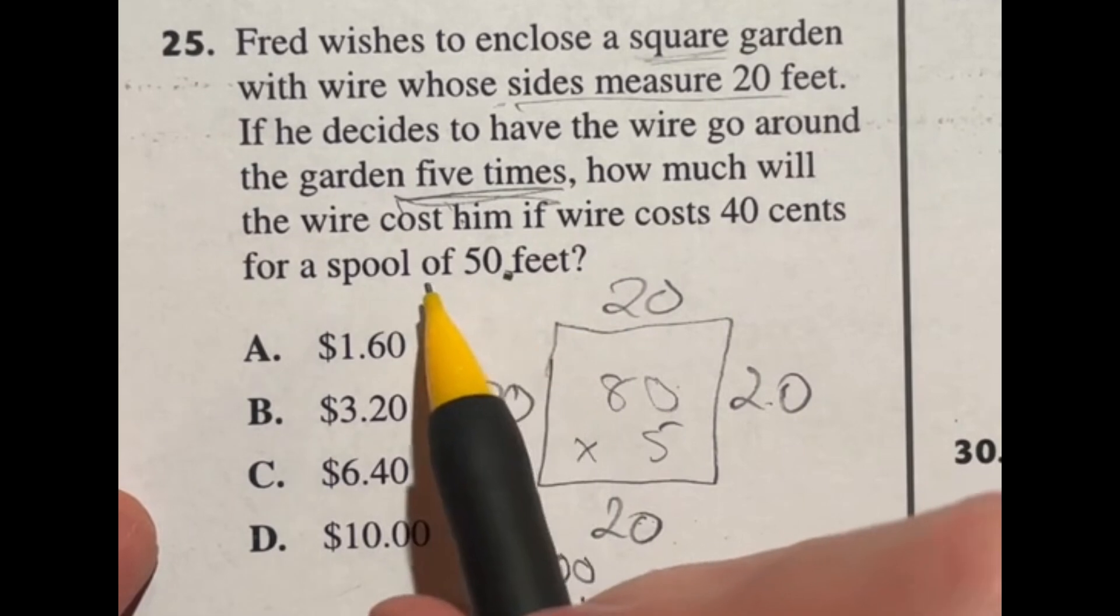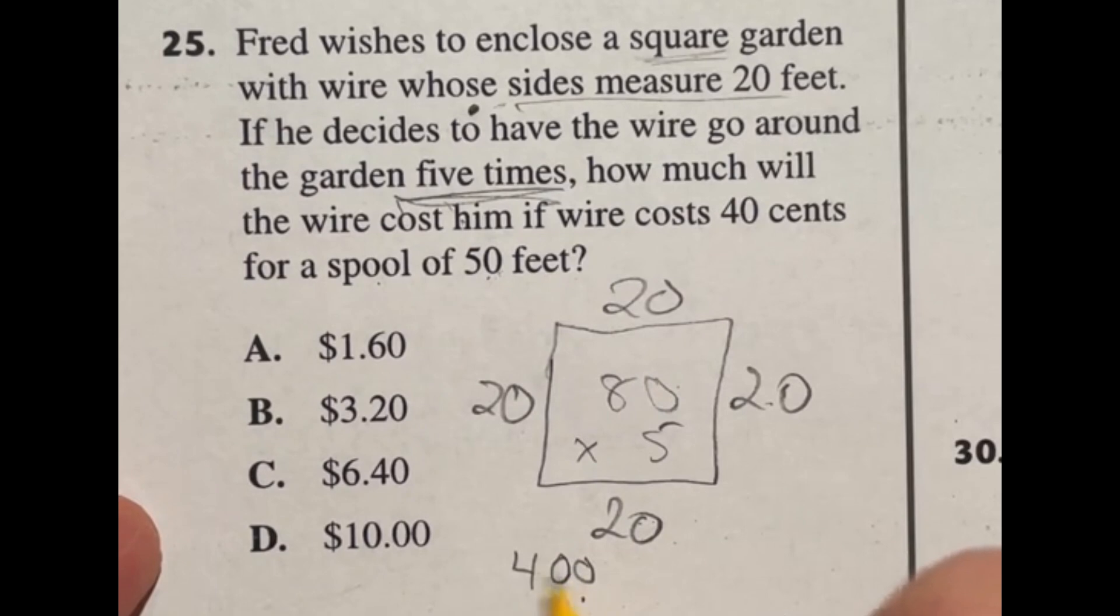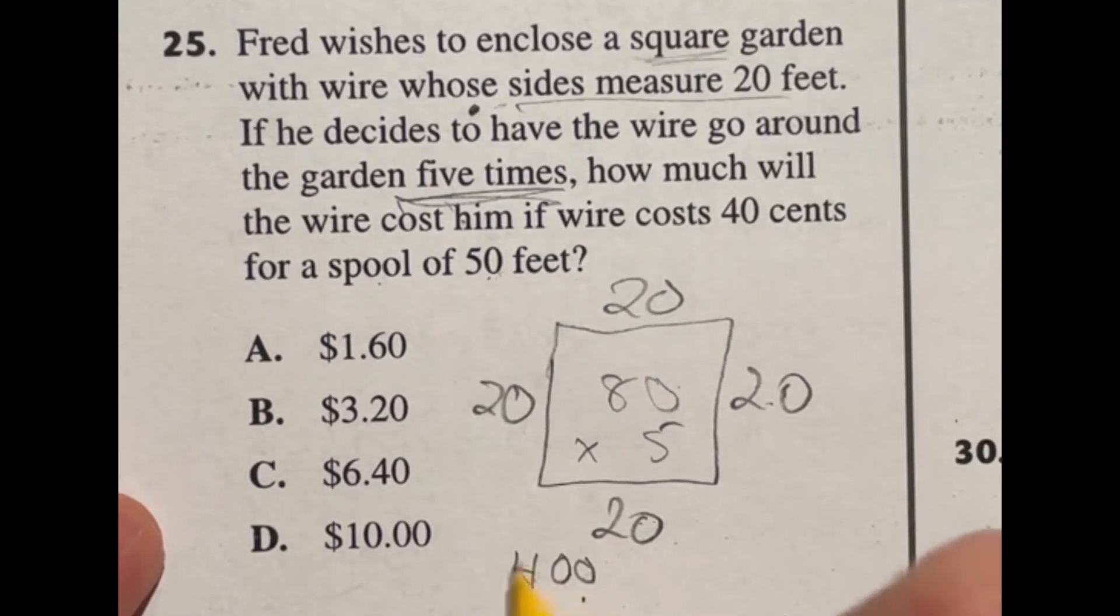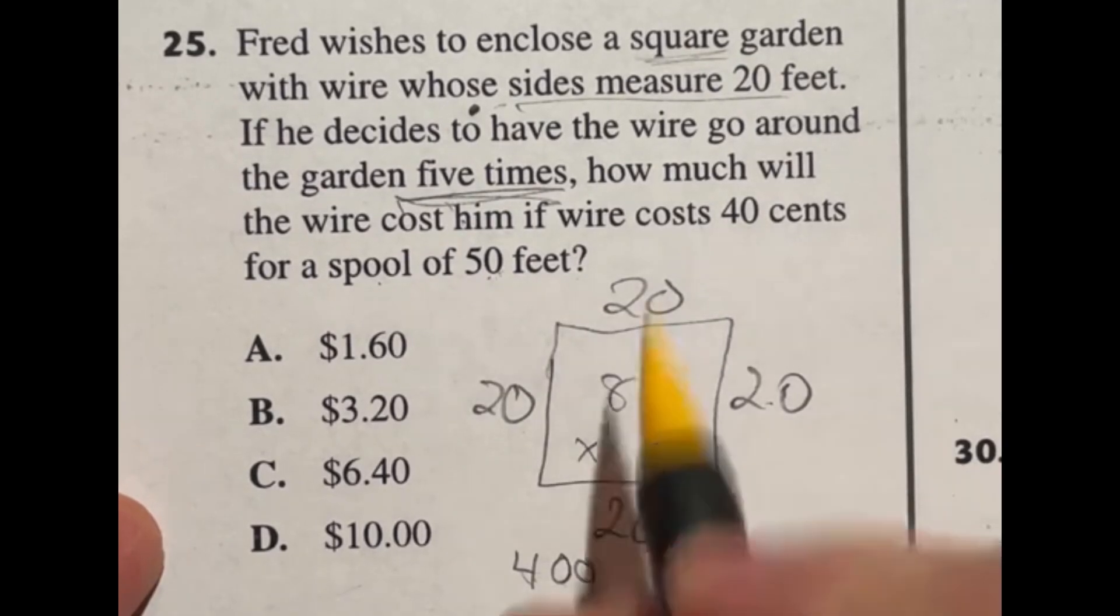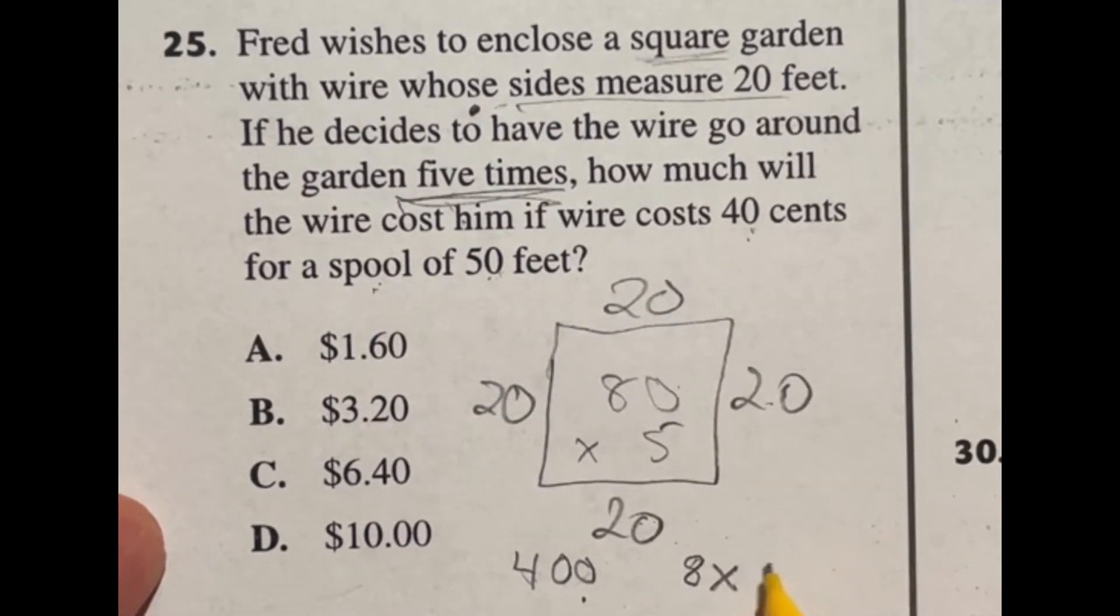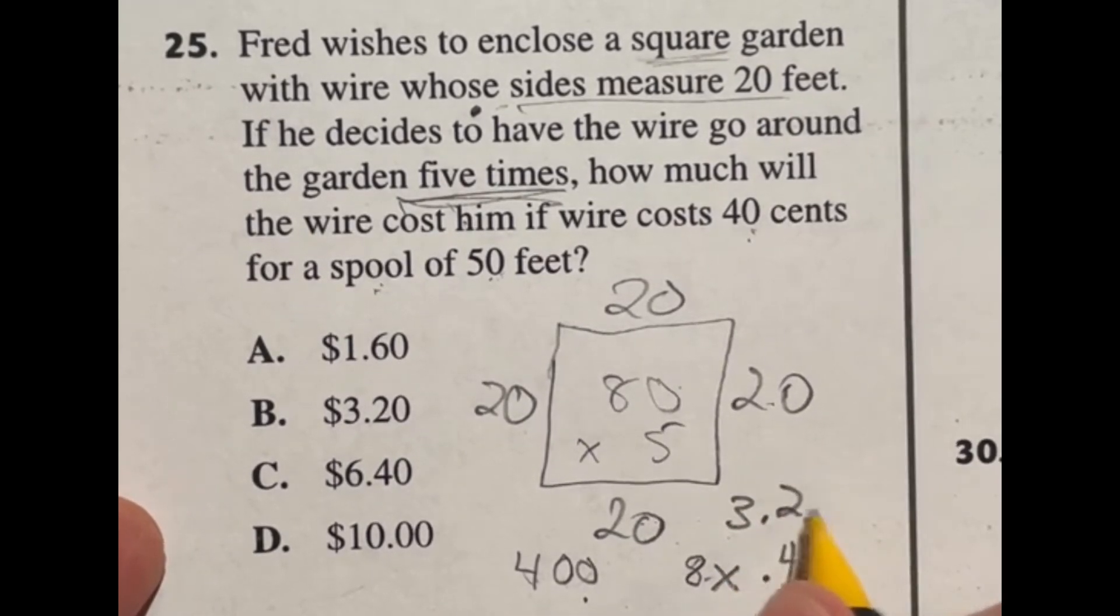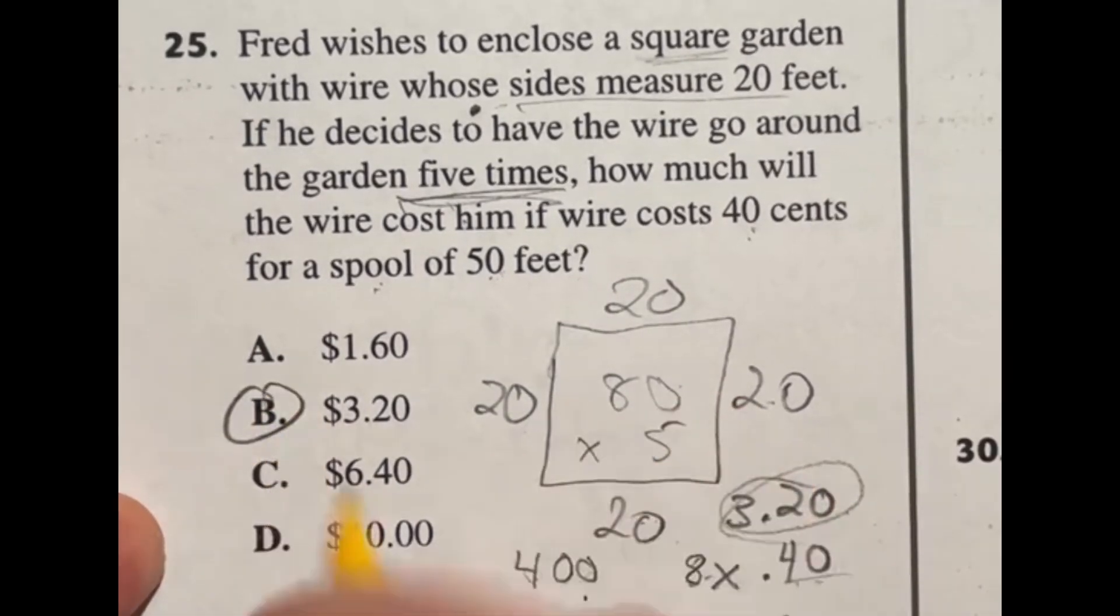Now we have to take a look here, we're buying spools that are 50 feet each. So how many times does 50 go into 400? Well I know 50 goes into 100 twice, so if I just multiply that by 4 we'll get to the 400. So that means 400 divided by 50 is going to be 8. So we need 8 of these spools at 40 cents apiece, so now I'm doing 8 times the 40 cents apiece and 8 times 4 is 32. So we're going to end up getting $3.20. So this answer here is B.